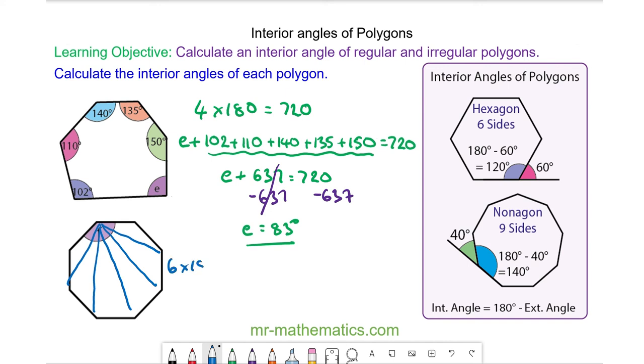So the total interior angles is 1080. Because it's regular all the angles are the same.